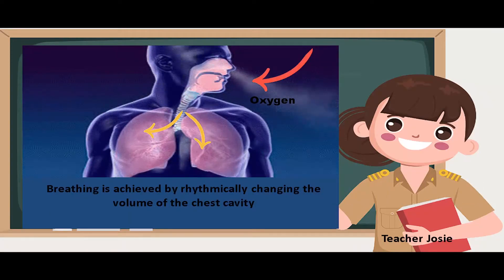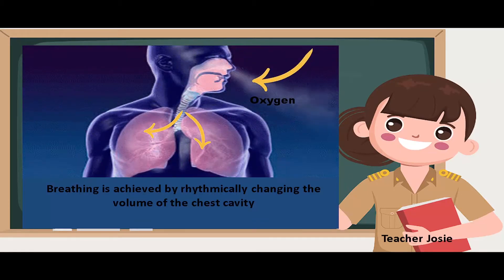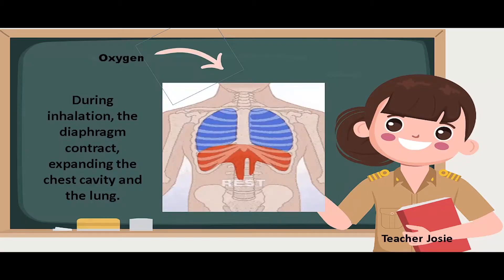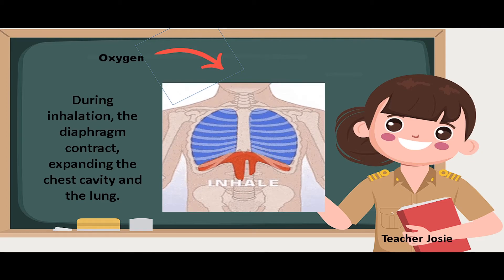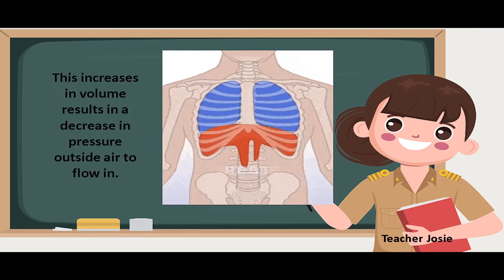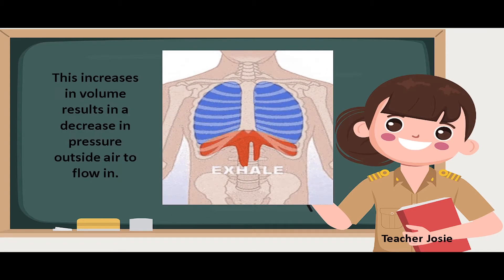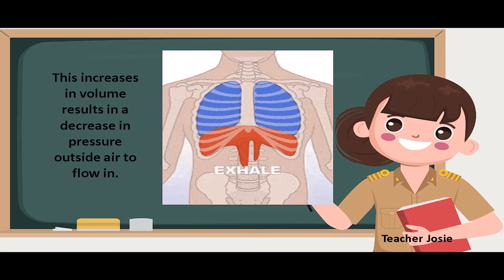Breathing is achieved by rhythmically changing the volume of the chest cavity. During inhalation, the diaphragm contracts, expanding the chest cavity and the lungs. This increase in volume results in a decrease in pressure, causing outside air to flow in.